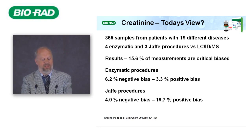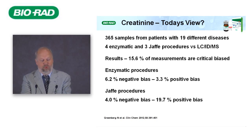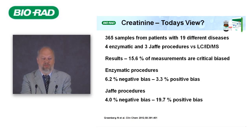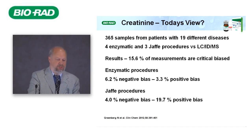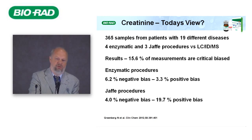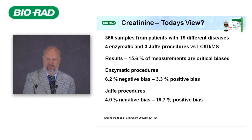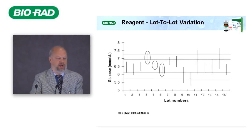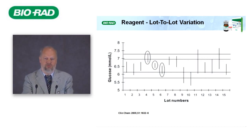The creatinine method we use today: here we have a nice experiment — 365 samples from patients with 90 different diseases were sent out to different procedures to measure creatinine against a reference procedure. We compared four enzymatic and three Jaffe procedures. About 16% of measurements were critically biased. In the enzymatic procedure, 6% had a negative bias and 3% a positive bias. The Jaffe procedure — no one should be using it, it's a 100-year-old method, it's cheap but creates a high number of errors that the healthcare economy ultimately has to pay for.